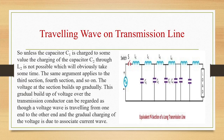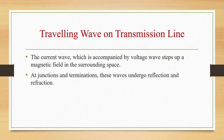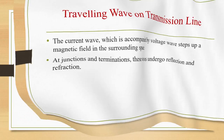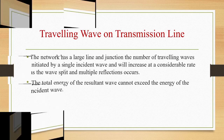This diagram shows the equivalent pi section of a transmission line. Unless capacitor C1 is charged to some value, charging of capacitor C2 through L2 is not possible, which takes some time. The same argument applies to the third, fourth sections and so on. Voltage at each section will build up gradually, and this gradual buildup can be regarded as a voltage wave traveling from one end to another. The gradual charging is due to the associated current wave, which sets up a magnetic field in the surrounding space. At junctions and terminations these waves undergo reflection and refraction, and total energy of the resultant wave cannot exceed the energy of the incident wave.